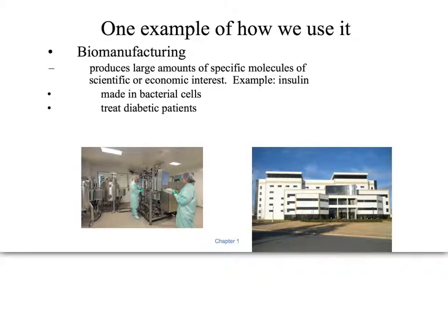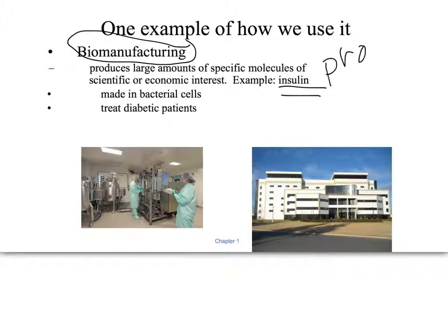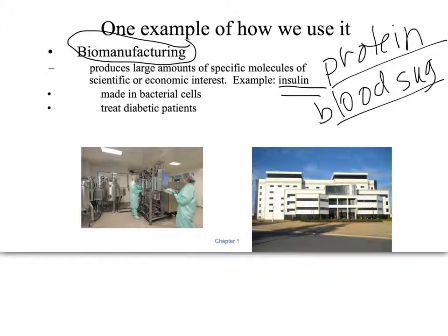One example of how we use biotechnology is biomanufacturing, where we try to make a large quantity of one specific type of molecule. An example of this is insulin. Insulin is a protein that regulates your blood sugar.